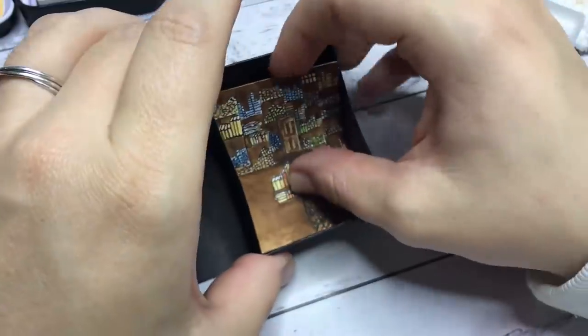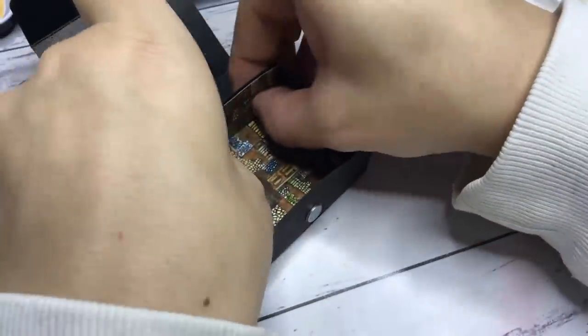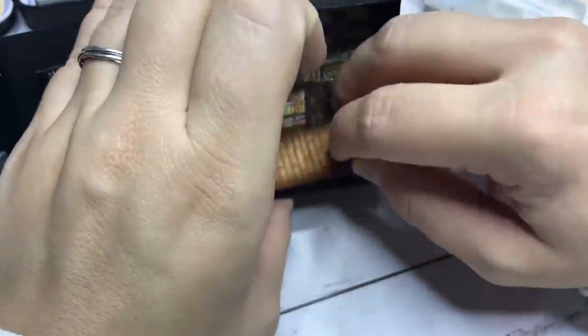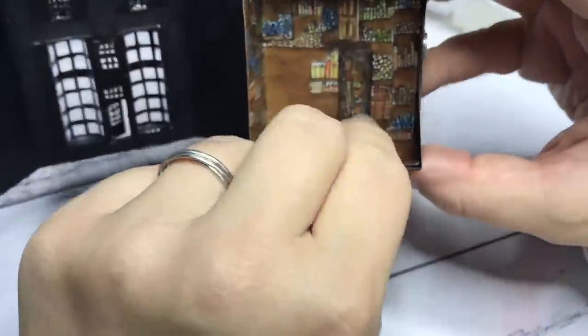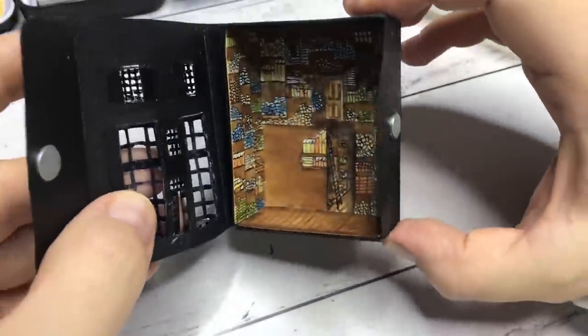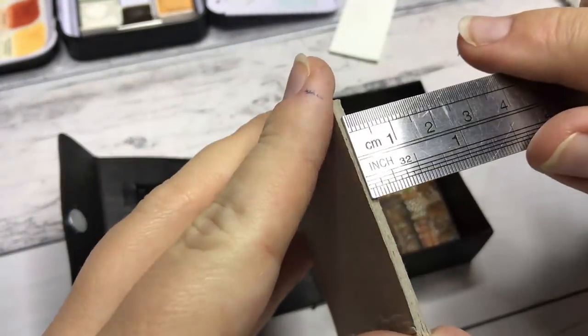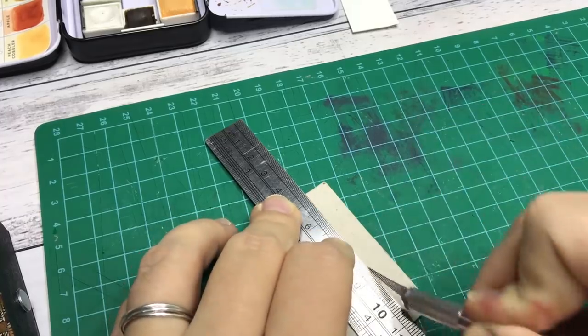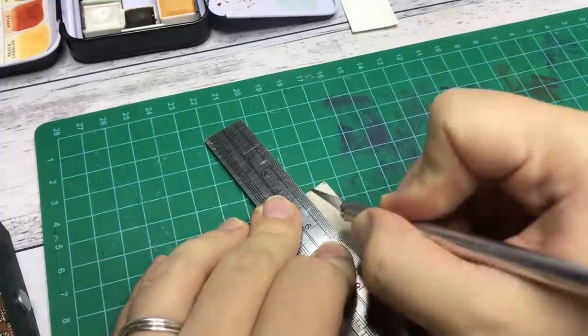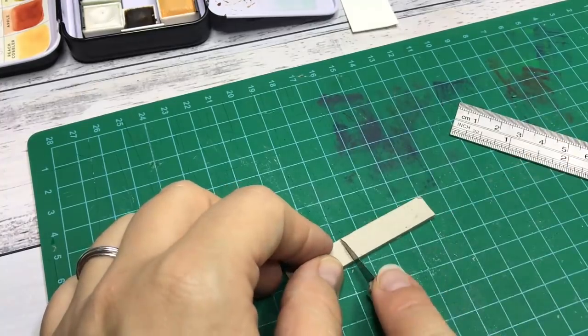After that is all dry, I glue in the back and the side to finish this part up. But we're not done yet. Out of some thick cardboard that came from the back of a block of paper, I'm going to create an extra wall that gives this piece a bit more dimension. I draw and paint on the same wand boxes and glue this piece into the box.